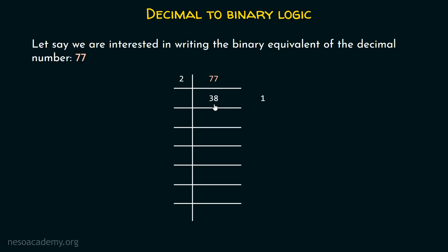After this, we must divide the quotient 38 by 2. Since 38 is an even number, we get 19 as the quotient and 0 as the remainder, because 19 times 2 is 38. Every time we will always get either 0 or 1 as a remainder. Then we divide 19 by 2 — this is an odd number — so we get 1 as the remainder and 9 as the quotient.